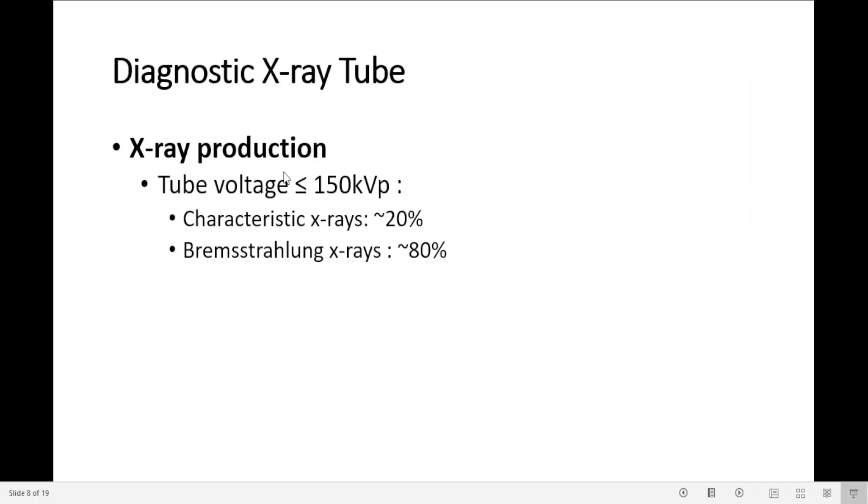X-ray production. If tube voltage is less than 150 kVp, approximately 20% is characteristic x-rays, 80% Bremsstrahlung x-rays. Above 150 kVp, Bremsstrahlung x-rays are predominant.